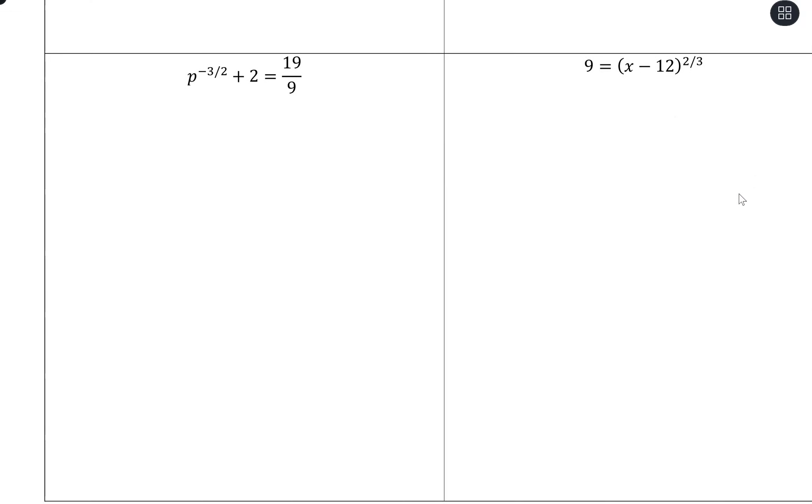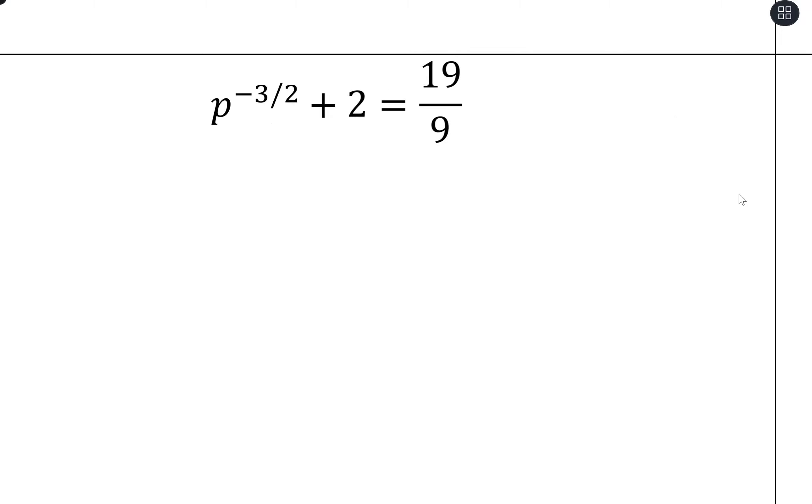A few more examples here. So something that has been happening with these already that we haven't had to really do the work for ourselves first is that we have our exponential piece isolated on one side of the equation. So this time I have the p to the negative 3 halves, but I have this plus 2. What I want to do is subtract 2 away from both sides so that I have p to the negative 3 halves all alone on one side. Because when I go and raise it to an exponent, I need it to be nice and simple over there.